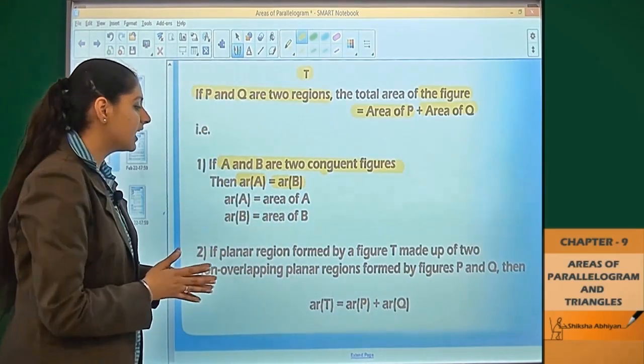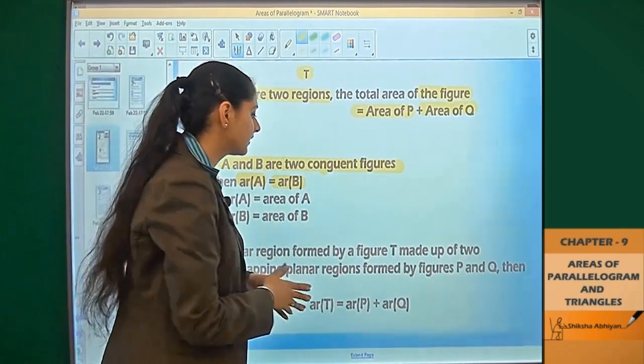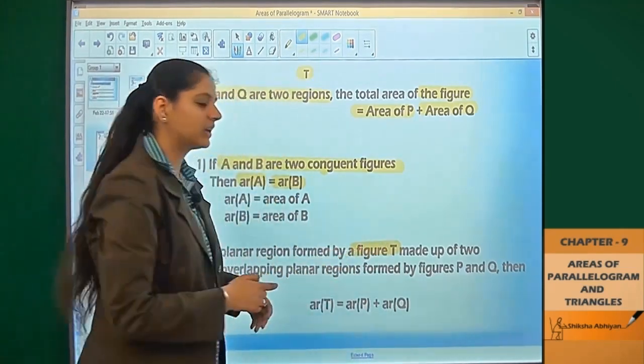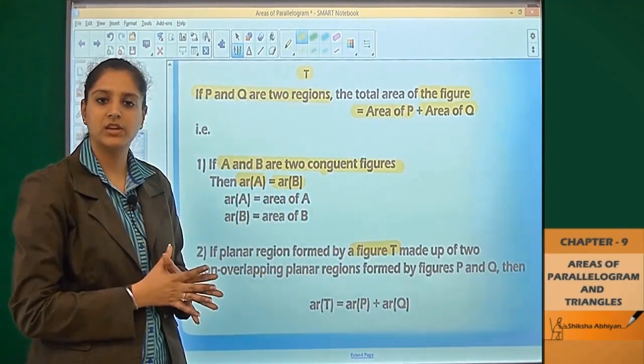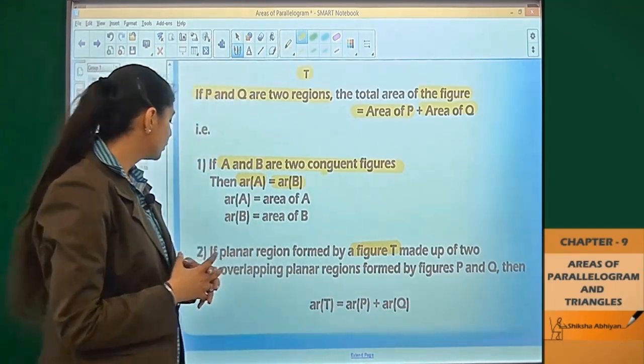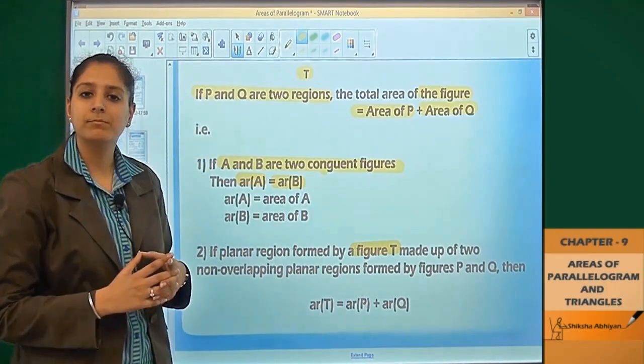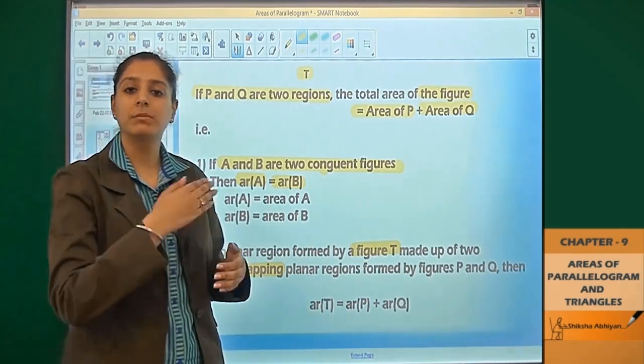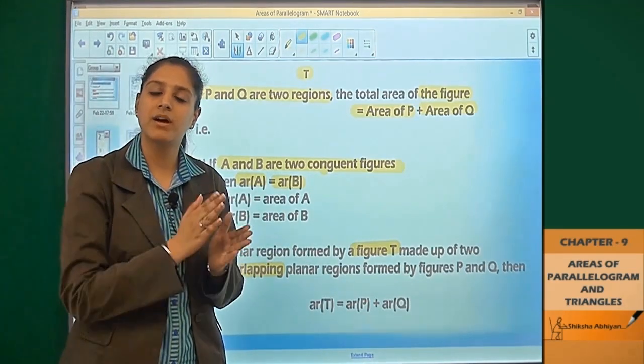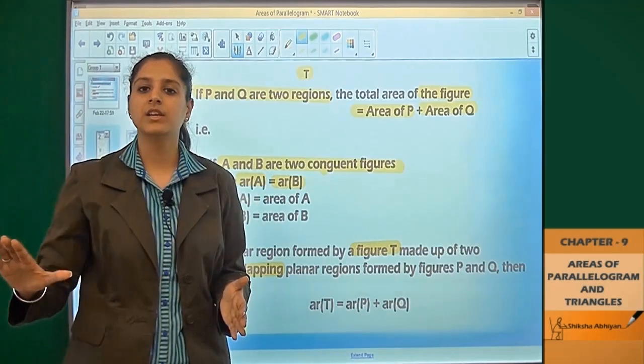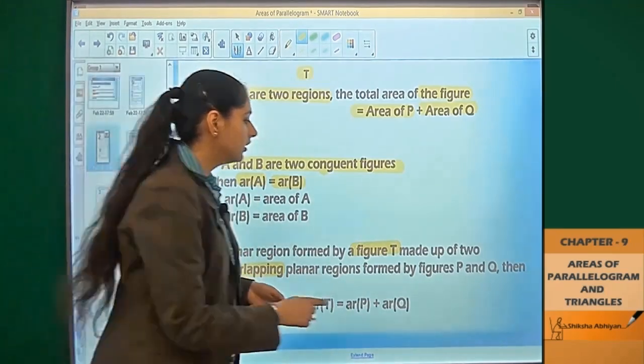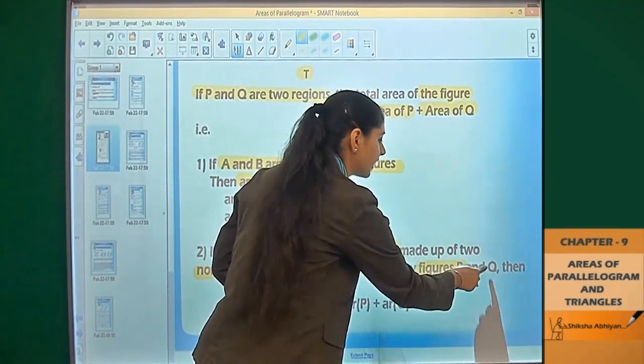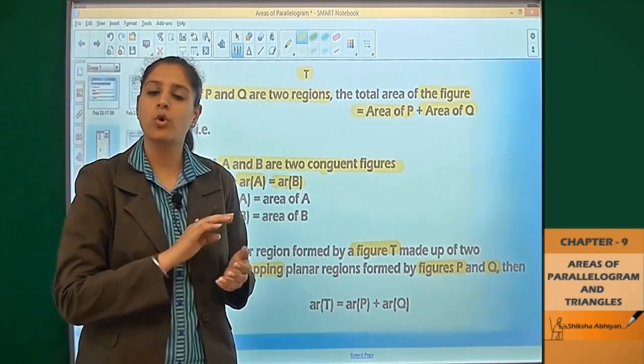Next is if a planar region formed by figure T is made up of two non-overlapping planar regions - non-overlapping is very important - connected in a continuous fashion, then figures P and Q are two regions that are not overlapping but together form figure T.